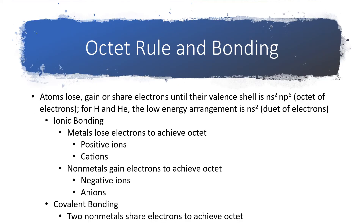Let's briefly revisit the octet rule and how it applies to bonding. Atoms will want to gain, lose, or share electrons until their valence electron shell is ns²np⁶. 2 plus 6 gives us 8 electrons, which is where we get the term octet. For hydrogen and helium, this low energy arrangement of electrons is actually just going to be ns², specifically 1s², only that first shell. So sometimes the octet rule is called the duet rule when it comes to hydrogen. Helium is not going to form bonds, so hydrogen is the element we will encounter this with.